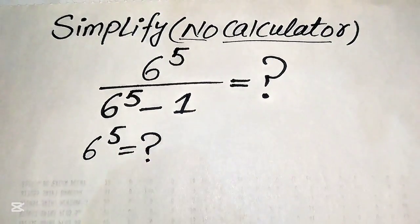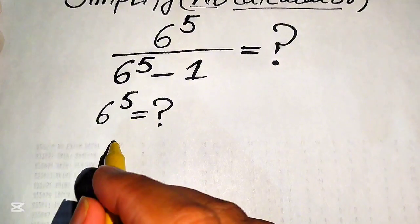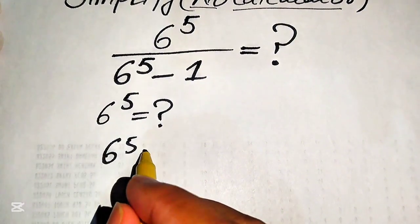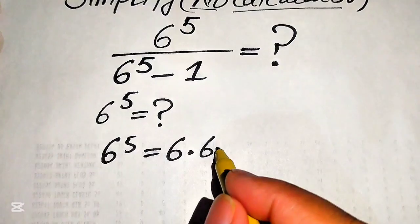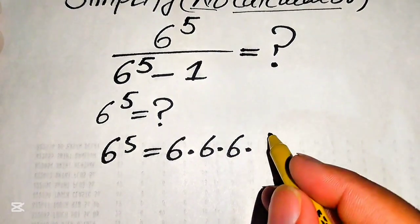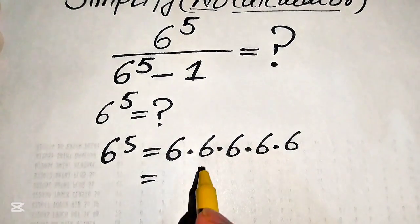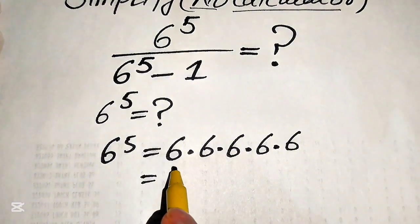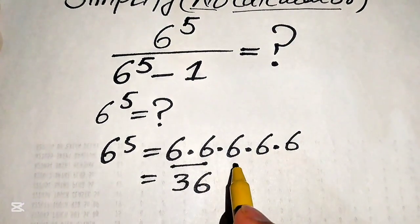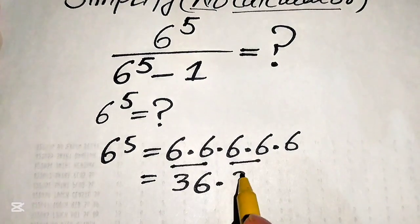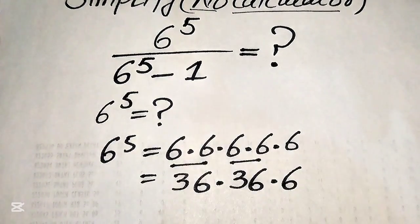In order to find this value, you know that the meaning of 6 to the power of 5 is that we multiply 6 five times. So 6 times 6 becomes 36, this 6 times 6 also becomes 36, and at the last we have 6 only.